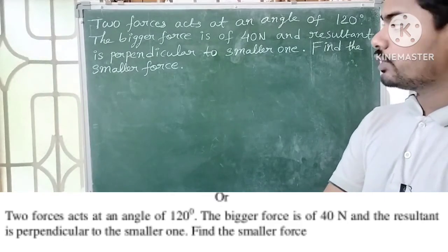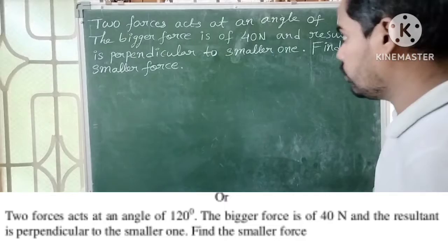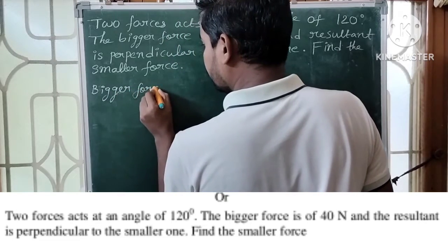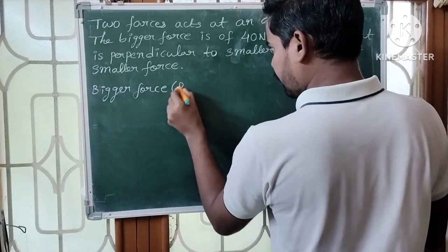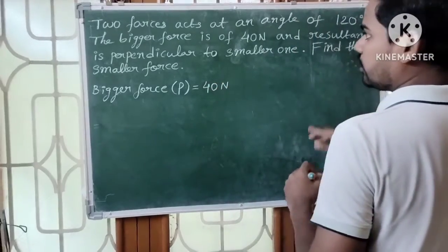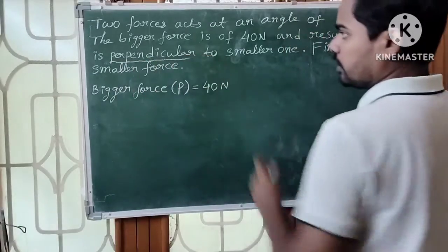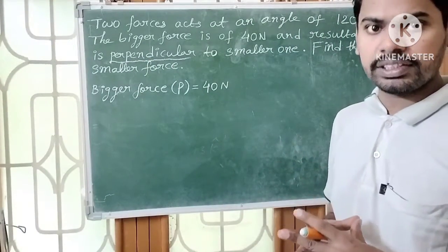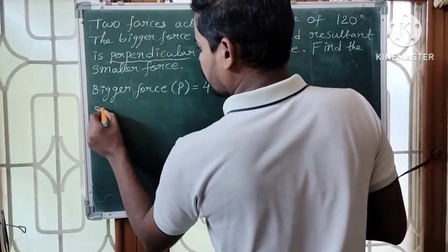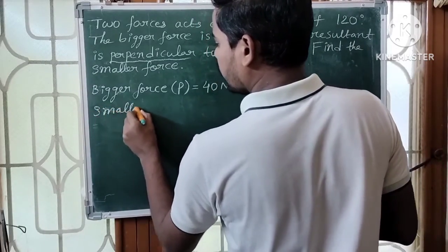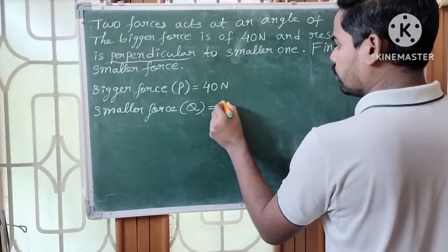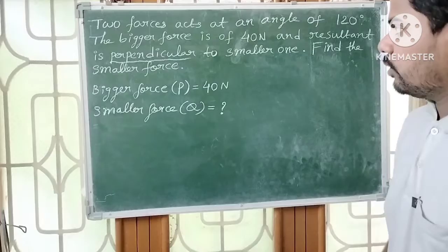There are two forces. The bigger force is given as 40 Newtons. Let us denote the bigger force as P, so P equals 40 Newtons. The resultant of the bigger force and smaller force is perpendicular to the smaller force — that means a right angle. Let us denote the smaller force as Q. Q is equal to how much — that is what we have to find.